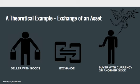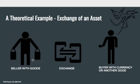Let's go back to basics before we get into that. A theoretical example of all the roles here — this is a very simplified one being shown on the screen. On the left we have a seller with goods, we have an exchange, and we have a buyer with currency or maybe another good. This isn't really an example specific to crypto, but I want to go over the roles so everybody's aware of how this is playing out. The seller obviously has a good or service to offer.